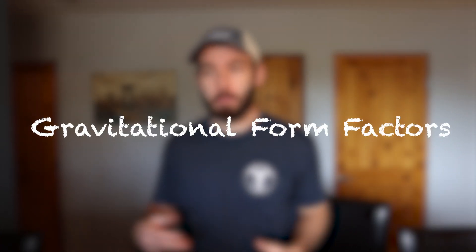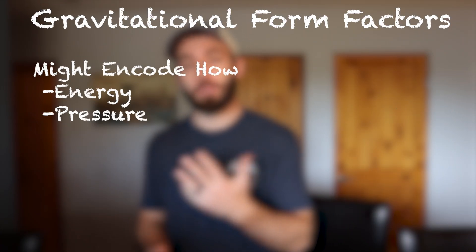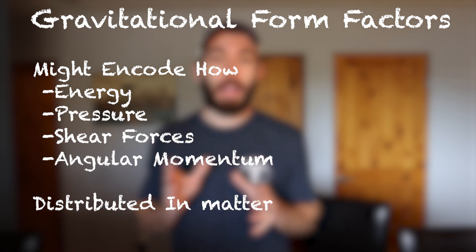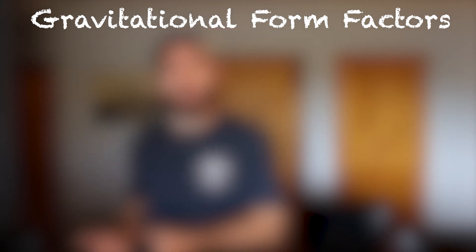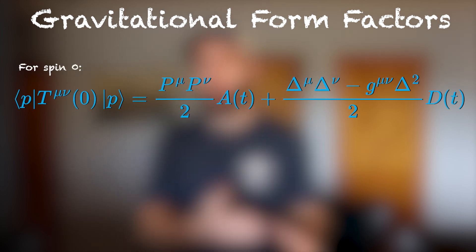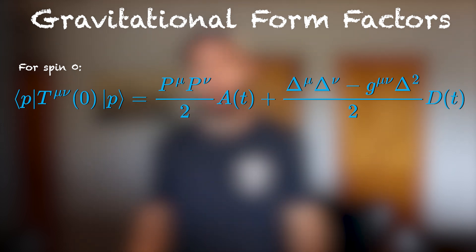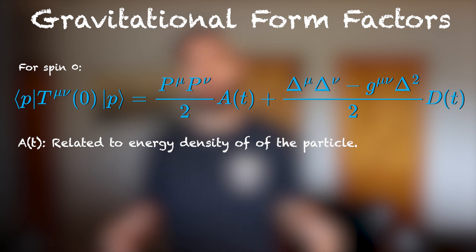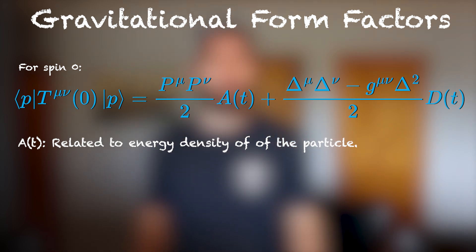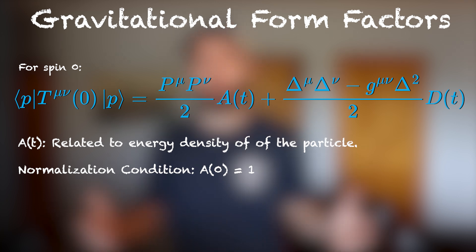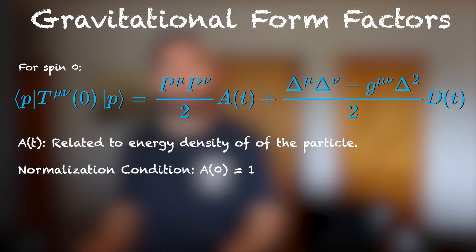That video is linked in the description. But to give you the spark notes: I study these things called gravitational form factors, which we think are related to how things like energy, pressure, shear force, and spin are distributed inside of a particle. They're called gravitational form factors because they're related to the energy-momentum tensor — the right-hand side of Einstein's field equations for gravity. I primarily study the A and D terms. The A term, which has to do with energy distribution, has to satisfy a normalization condition: A of 0 has to equal 1. Roughly speaking, in the rest frame of the particle, the total energy is its mass energy. There's not really much room to budge there.